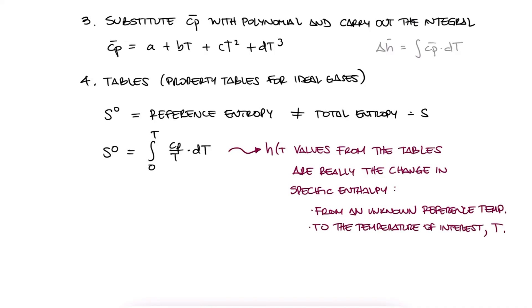we went over how the specific enthalpy values are really the change in specific enthalpy between a reference temperature to the temperature that you're interested in. So when you subtract the table's enthalpy values, you are getting rid of that reference temperature, whatever it is. And it's the same here.